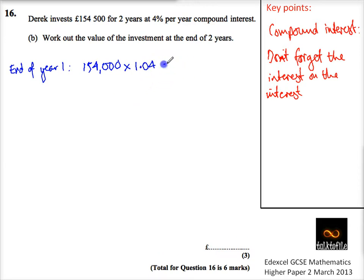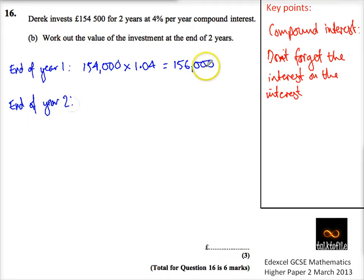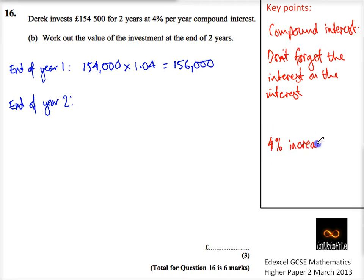That tells me it goes up to 156,000. Now, I've not worked out the 4% and added it on separately — I've done it in one step with this calculation. So a 4% increase is best done by multiplying by 1.04.